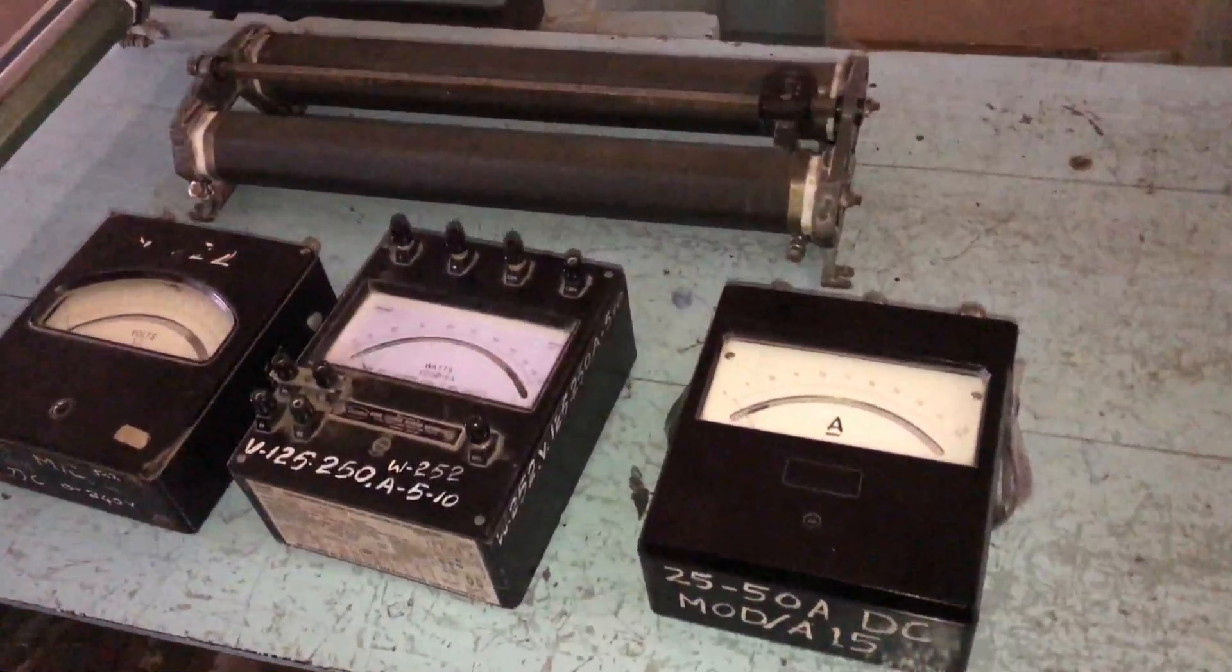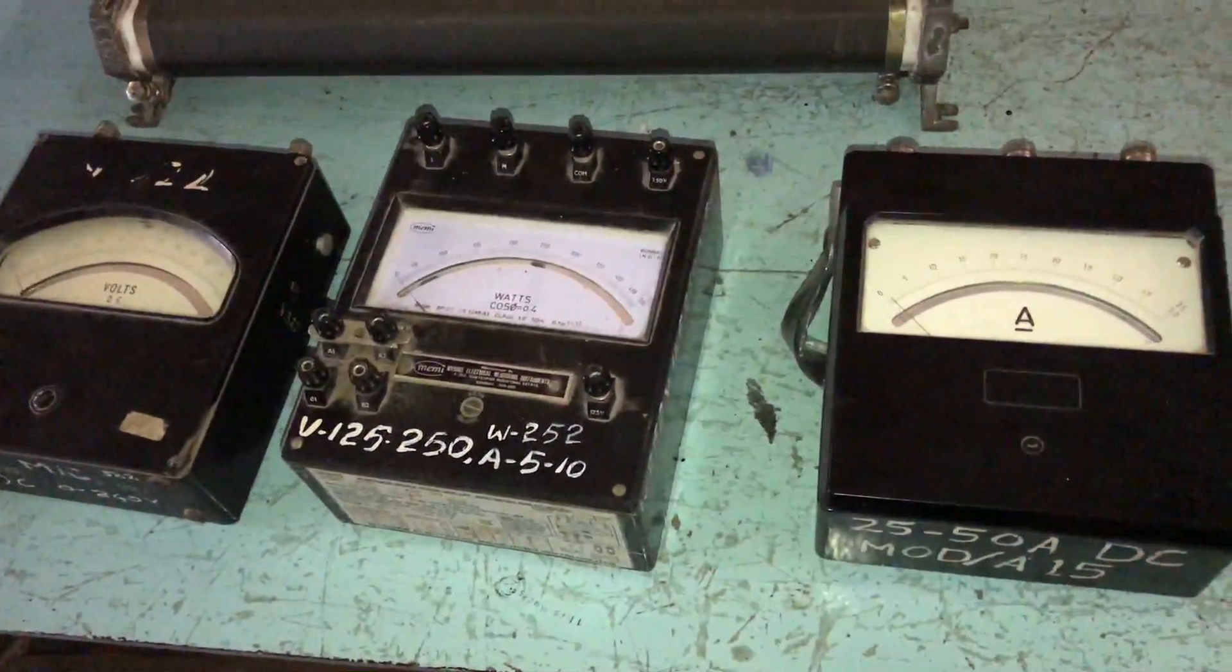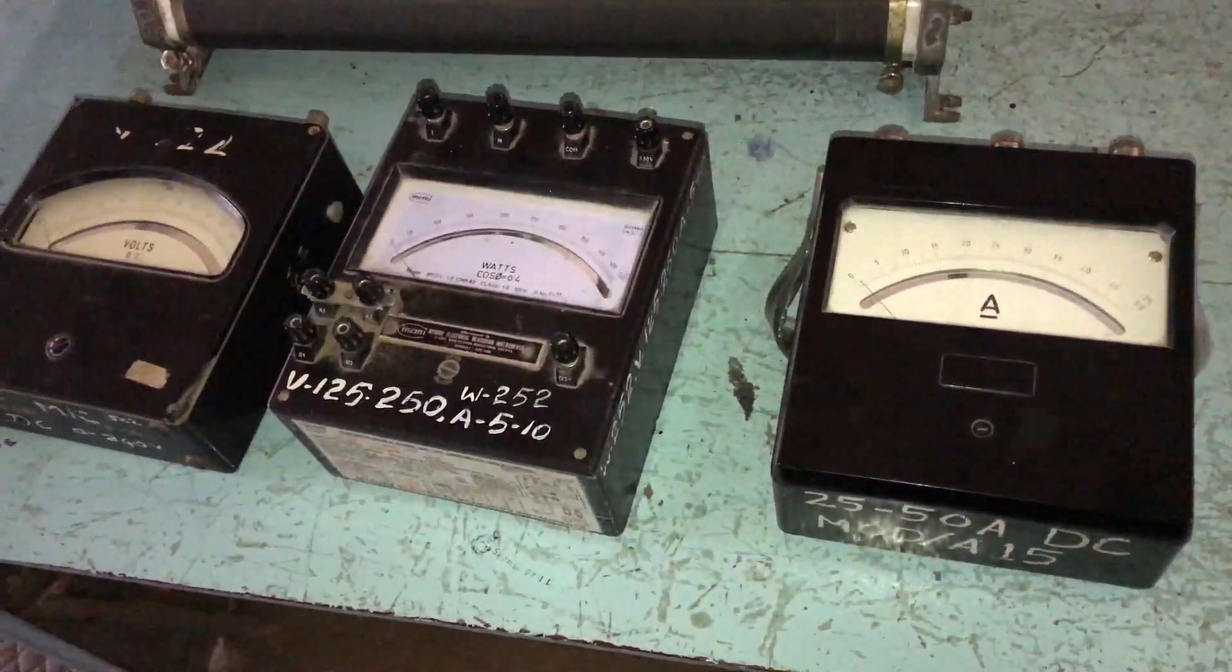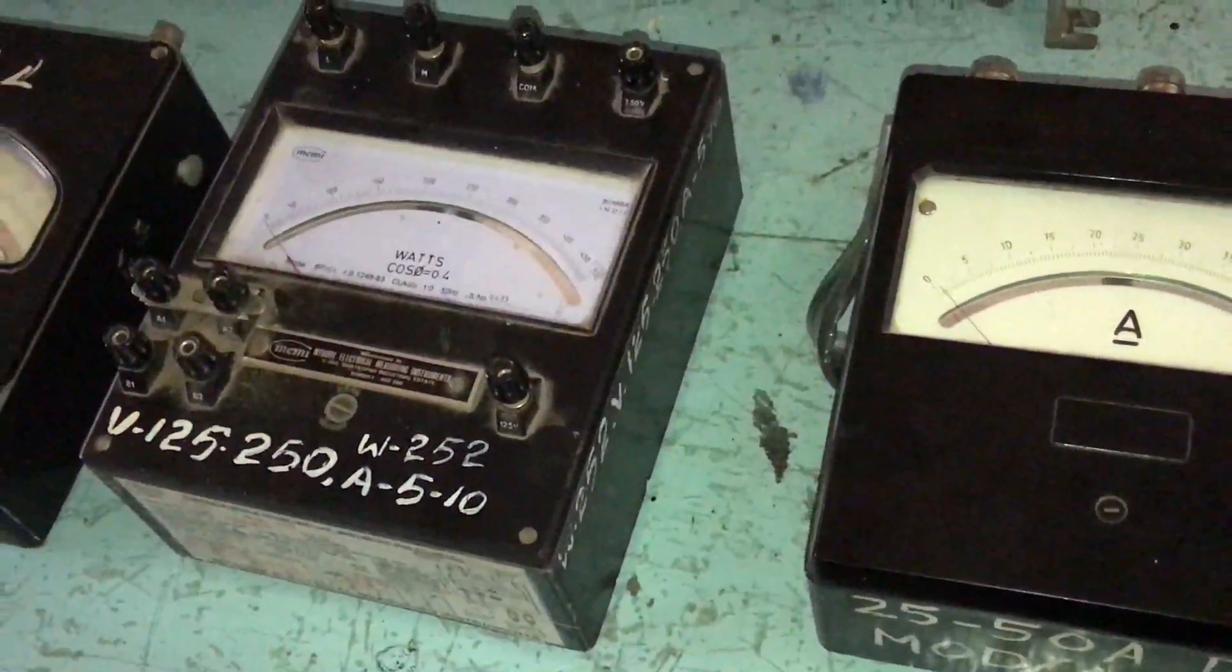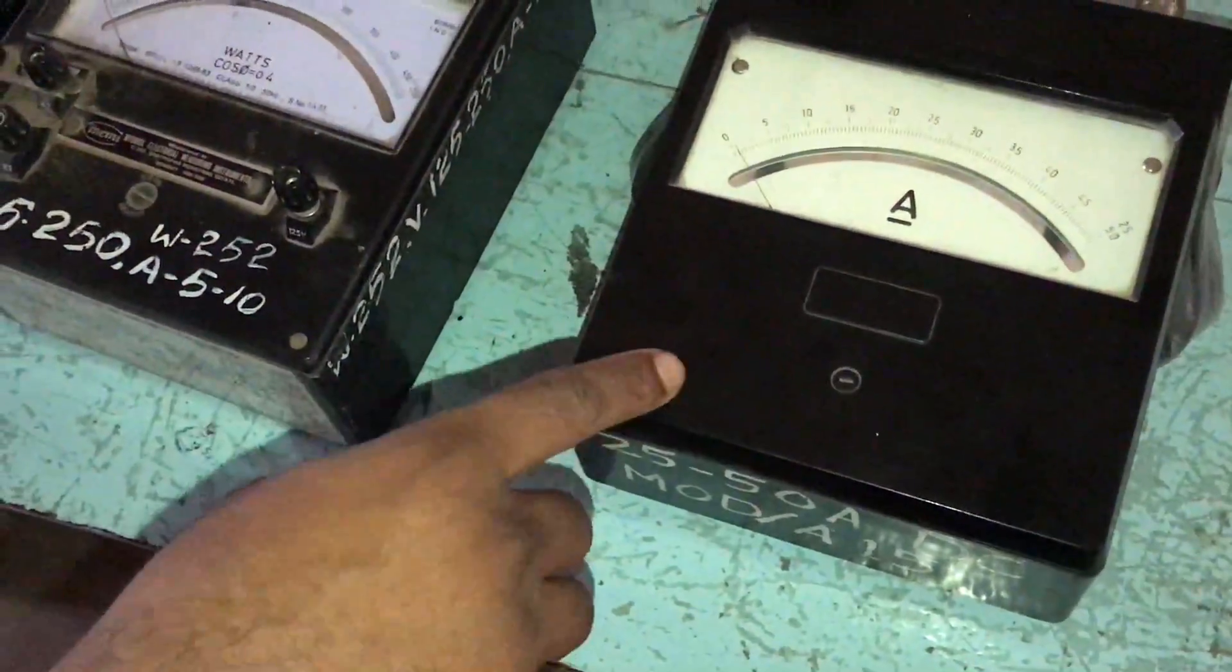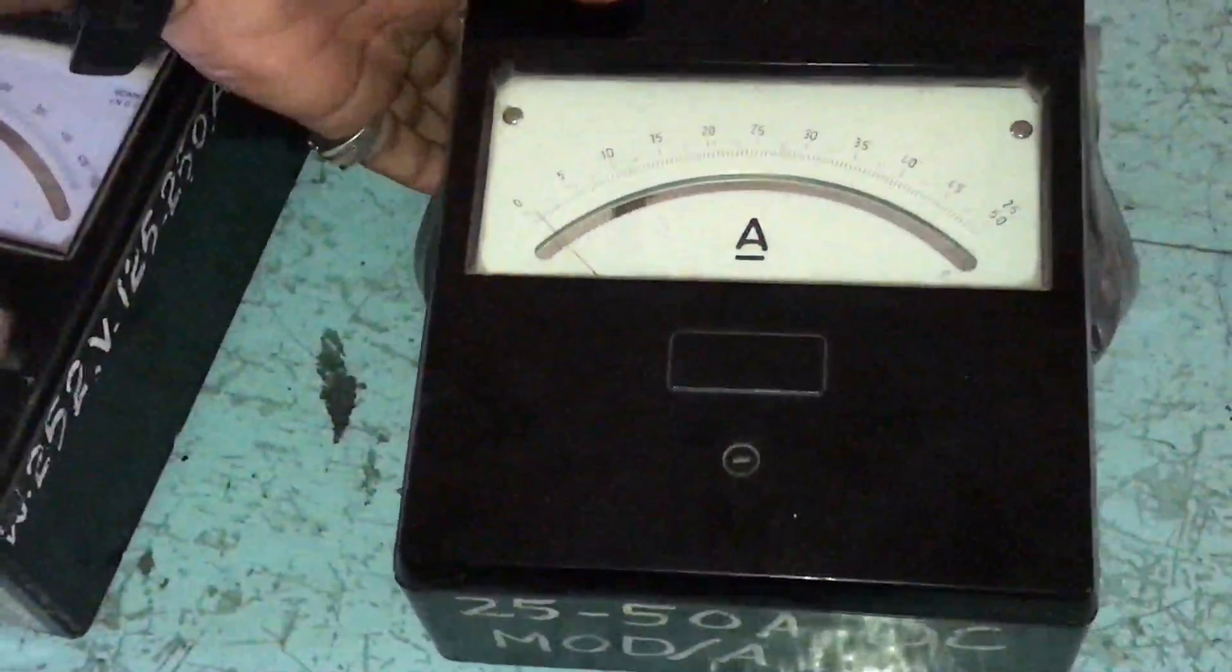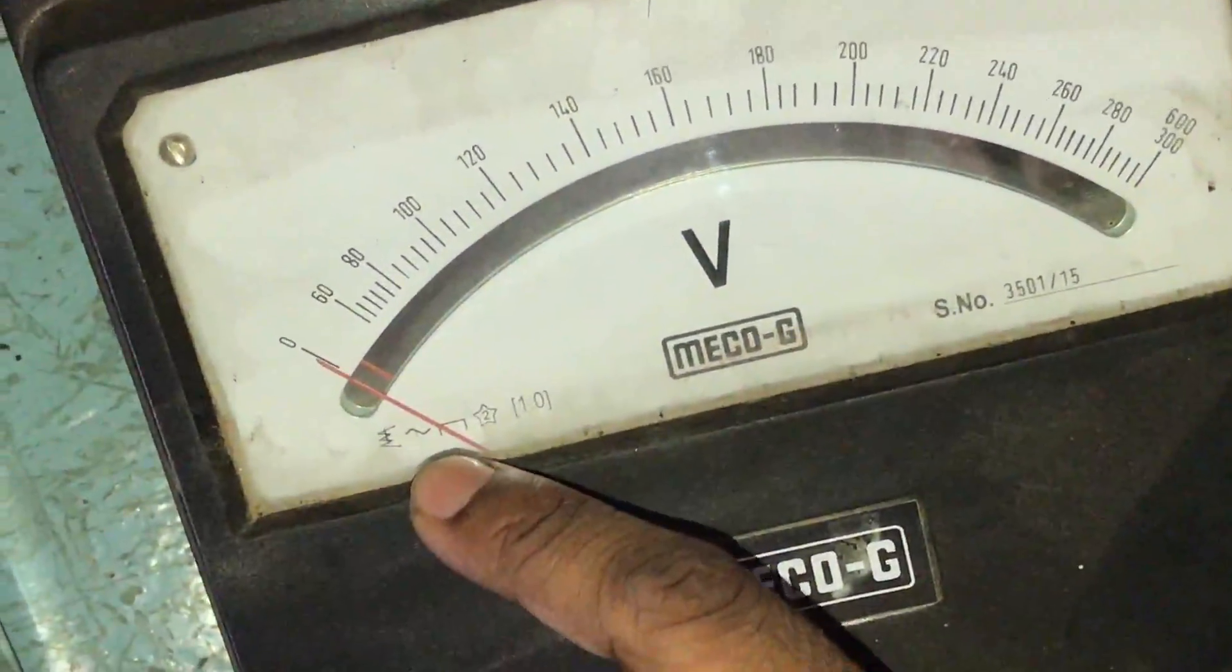This video will explain about the instrumentation. Instrumentation is classified into two: MA instruments and MC instruments. MA instruments are moving iron instruments used for AC and DC. Moving coil instruments are only used for DC. Moving coil indicates this symbol. Moving iron instruments indicate the sine wave symbol.